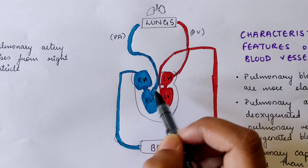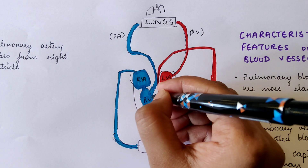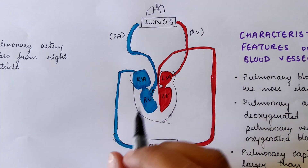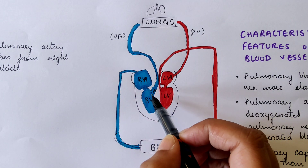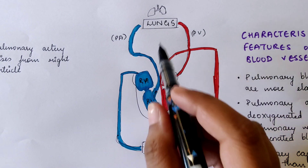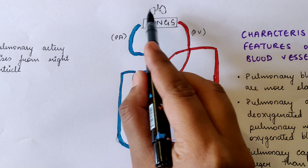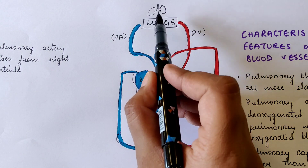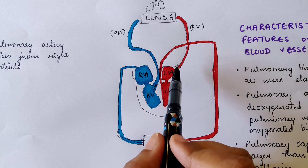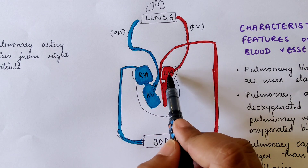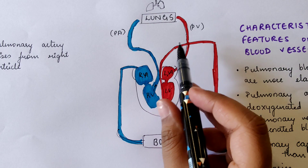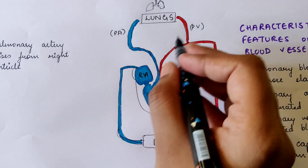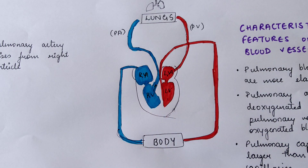From the right ventricle, blood goes to the lungs where it is oxygenated, and from there through the veins it comes to the left atrium, from left atrium to the left ventricle, and from here to the whole system — all the organs and all the other systems.